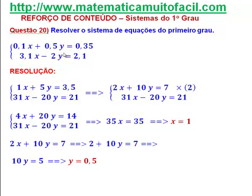Eu vou multiplicar essa primeira equação por 10. Por que eu farei isso? Quando eu multiplico por 10, 0,1 vai ficar 1x, o 0,5 vai virar 5y e o 0,35 vai virar 3,5. Já consegui simplificar. Não é bom trabalhar com números decimais em sistema, a gente sempre erra.